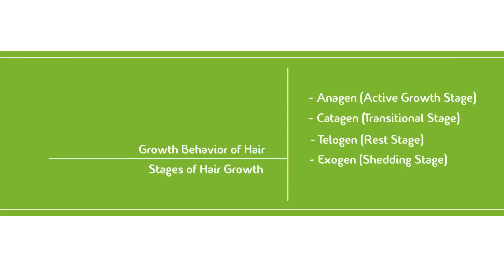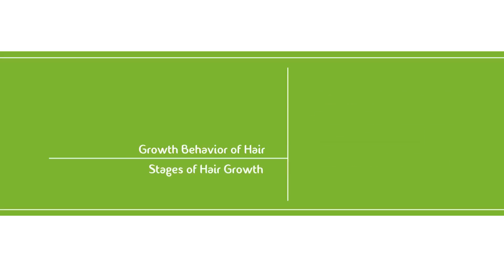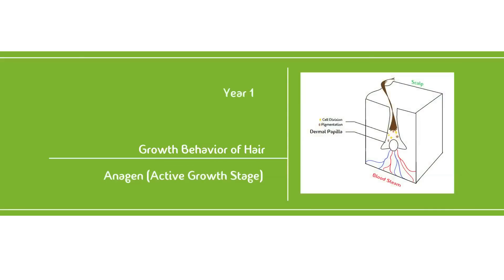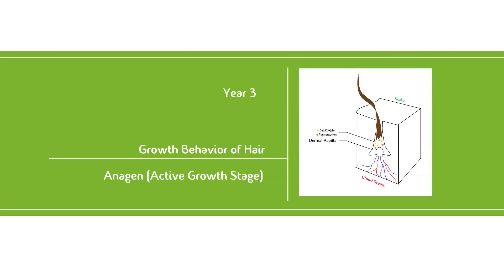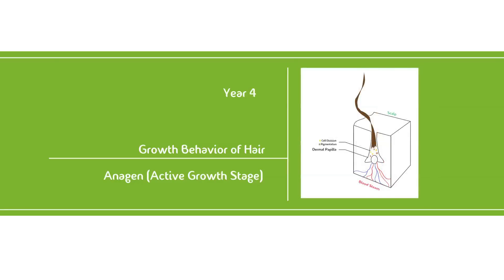Let's take a closer look at what's going on during each growth stage by starting with the anagen stage, better known as the active growth stage, which is obviously the most popular stage. In this stage, rapid cell division is taking place in the hair matrix. New hair is being created every day, hour, minute, and second — an average of 0.3 to 0.4 millimeters a day. For the human body, this renewal process is phenomenal.